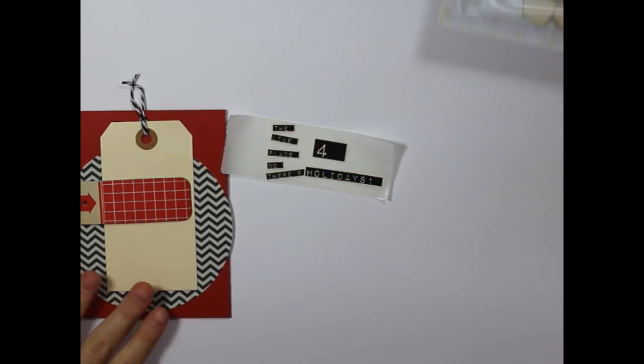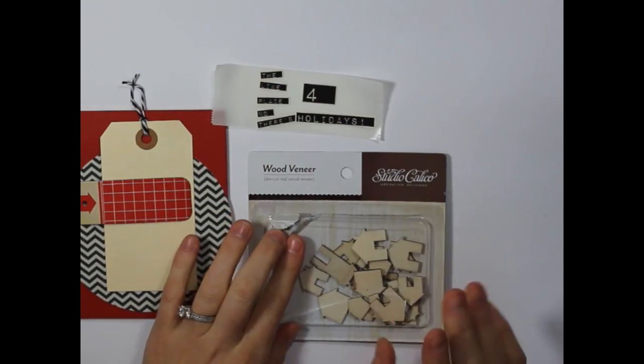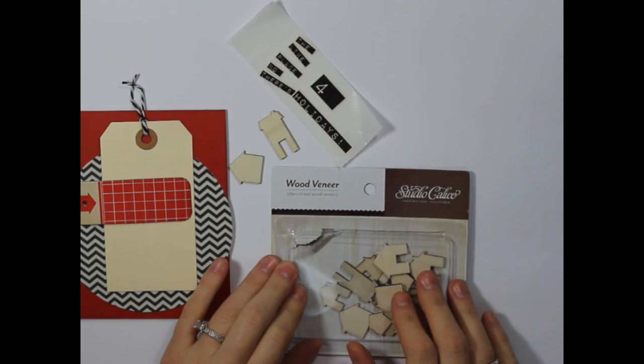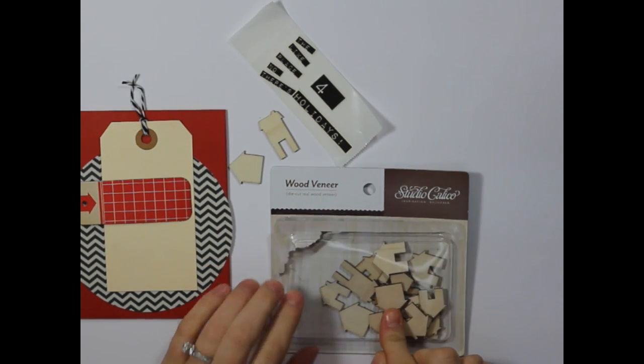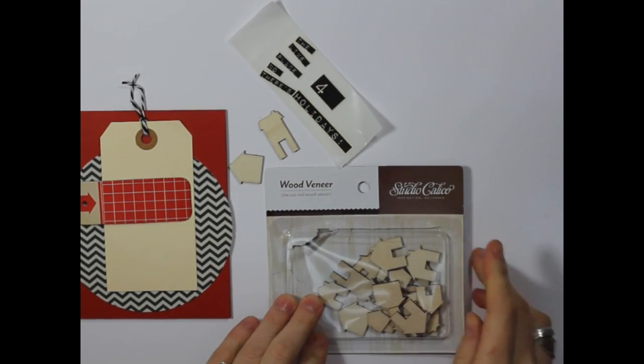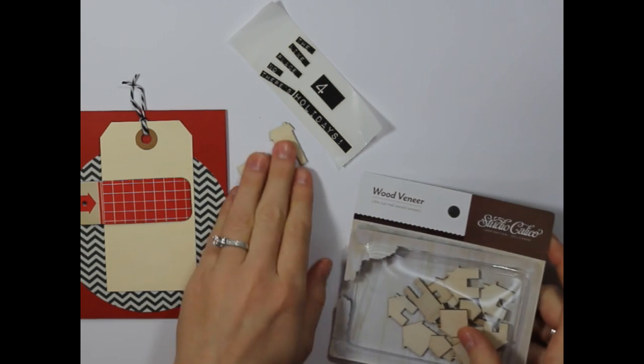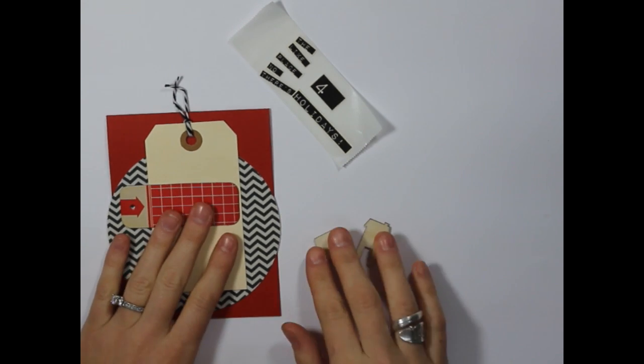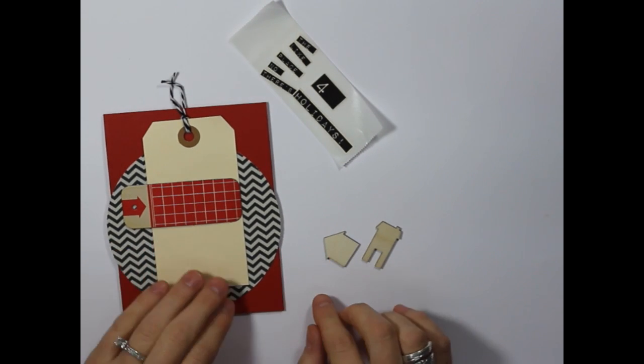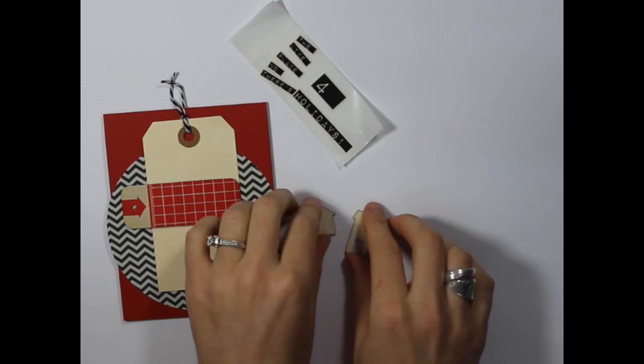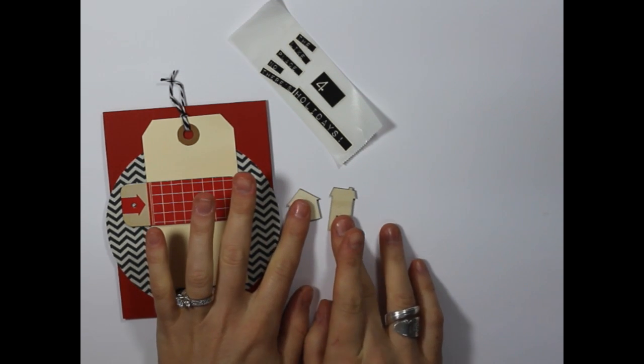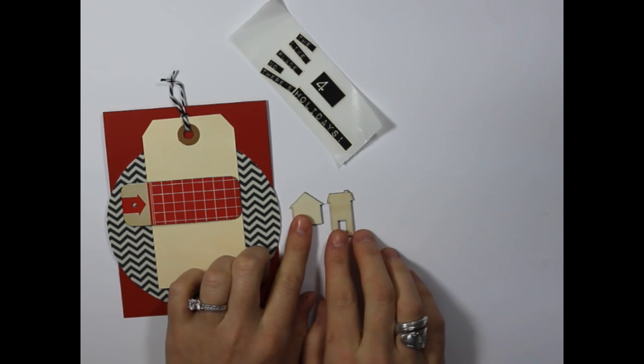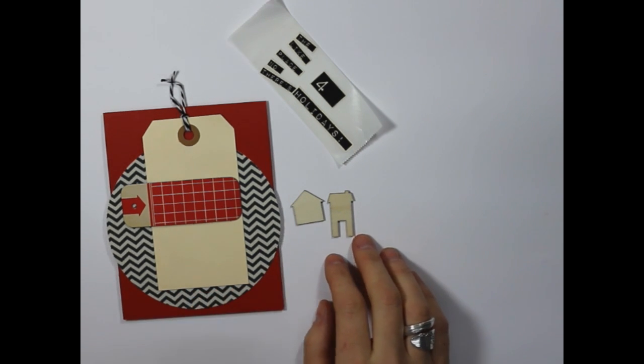Now we're going to bring in another element into our project. I pulled out a couple of little wooden houses from Studio Calico's wood veneer set that comes with lots of different types of houses, shapes, and sizes. So I just pulled out a couple that I liked. The sentiment we're going to create is there's no place like home for the holidays. That's why I went with these little wooden houses, because I wanted to represent the word home using this classic home icon.